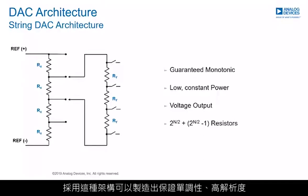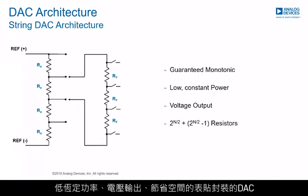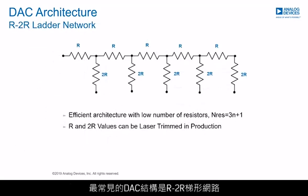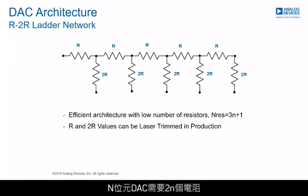This architecture allows the manufacture of guaranteed monotonic, high-resolution, low constant power, voltage output DACs in space-saving surface mount packages. The most common DAC structure is the R-2R ladder. It uses resistors of only two different values with a ratio of 2 to 1. An N-bit DAC requires 2N resistors and they can be laser trimmed in production.